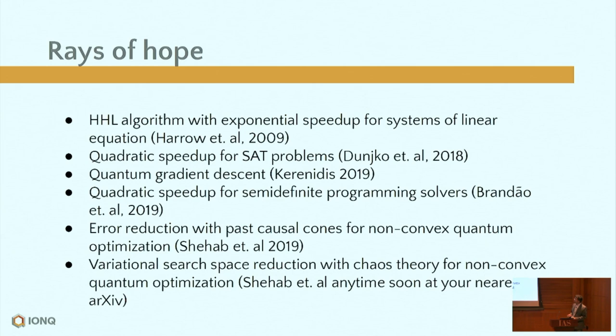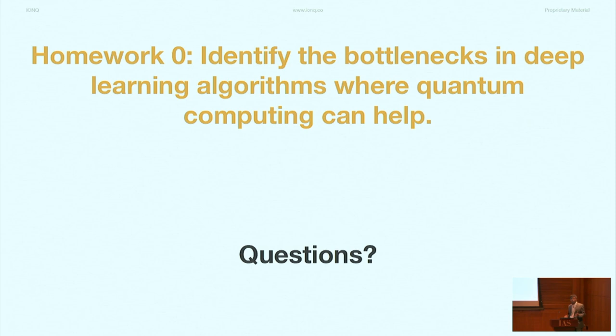There is some progress giving us hope: algorithms with exponential speedup for special systems of linear equations, quadratic speedup for SAT problems, and algorithms for gradient descent and semi-definite programming. There is also progress in error reduction for non-convex optimization. I'd like to invite the deep learning community to work with the quantum machine learning community to identify challenges where we can work together and improve the whole area of research. Thank you.